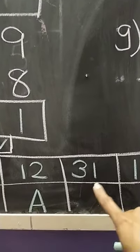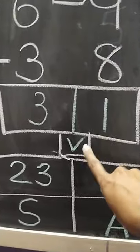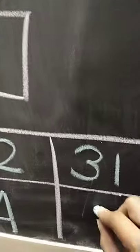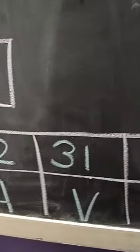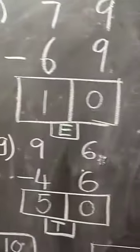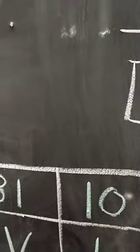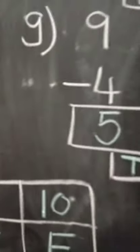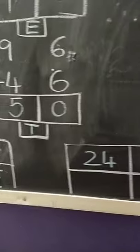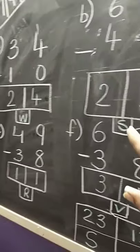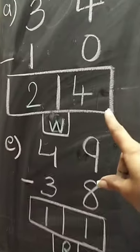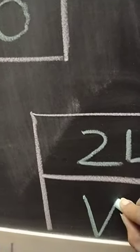Then we have 31 — that is V. So, I will write V. Then we have 10 — here it is E. So, I will write E. Next is 24 — there is W. So, I will write W.